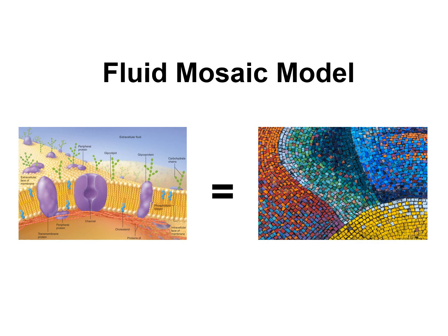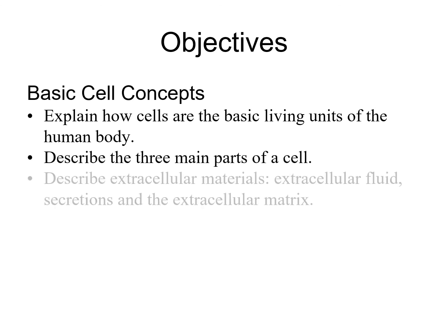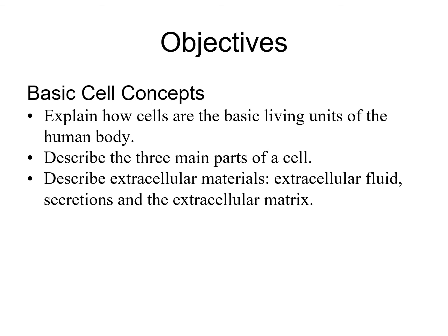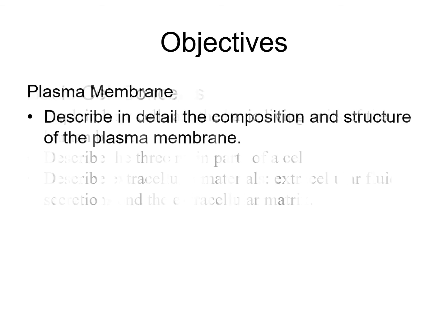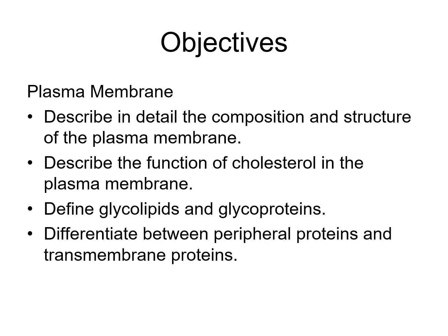Let's now review the objectives of the screencast. We started with basic cell concepts: how cells are the basic living units of the human body, the three main parts of the cell, and extracellular materials including extracellular fluid, secretions, and the extracellular matrix. We then focused on the plasma membrane: its composition and structure, the function of cholesterol, the definitions of glycolipids and glycoproteins, and the differentiation between peripheral proteins and transmembrane proteins.